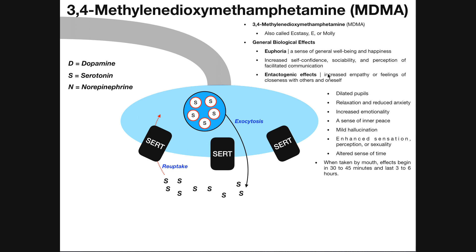Enactogenic effects, which are increased empathy or feelings of closeness with others and oneself; dilated pupils; relaxation and reduced anxiety; increased emotionality; a sense of inner peace; mild hallucinations; enhanced sensation, perception, or sexuality; and altered sense of time. On onset of oral administration, effects appear within half an hour to 45 minutes, and can last as long as 3 to 6 hours.